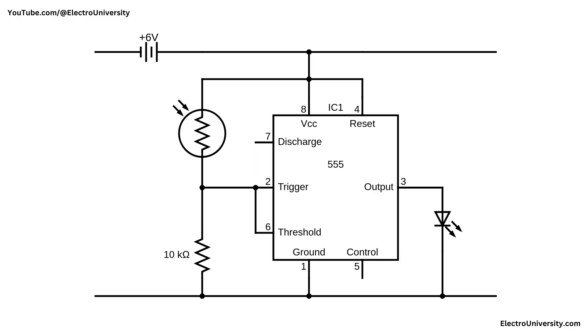When the sun rises and light hits the LDR again, its resistance drops, the voltage at pin two rises, and the 555 timer's output returns to low, switching the LED off. This design effectively mimics the behavior of real-world streetlights, turning on at dusk and off at dawn, making it ideal for low-cost automation projects.